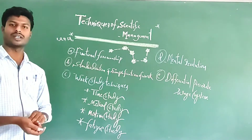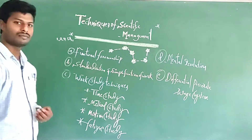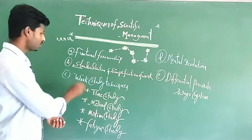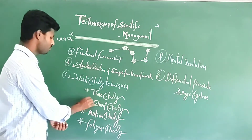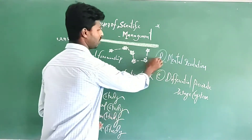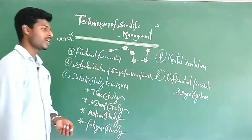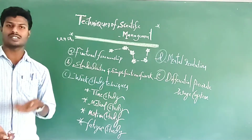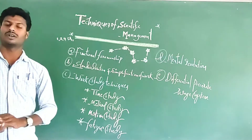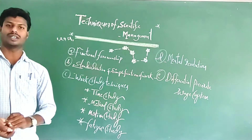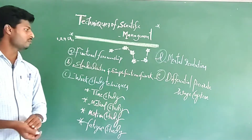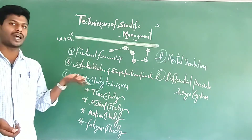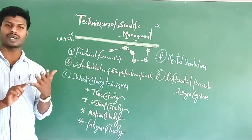These techniques increase the efficiency and productivity in the organization. The first one is functional foremanship, second is standardization and simplification of work, third is work study techniques — including time study, method study, motion study, and fatigue study — and the next one is mental revolution, and the last one is differential piece rate system. These are very important and deliberate techniques for optimum utilization of resources in order to increase quality output through less time and less cost.